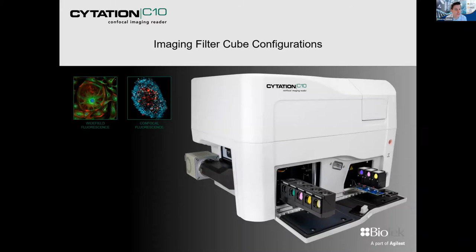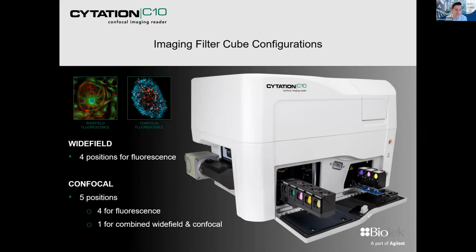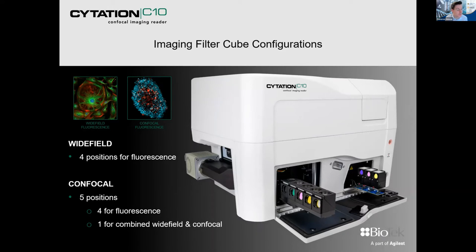As you can see on screen, the instrument's wide field filter cubes are housed here and the confocal filter cubes here, with the camera just on the side. With the plate reader functionality, the plate reader is situated inside the instrument — nothing external needed. Including the computer tower and screen, the total bench space is about two meters, so it's a very small footprint.